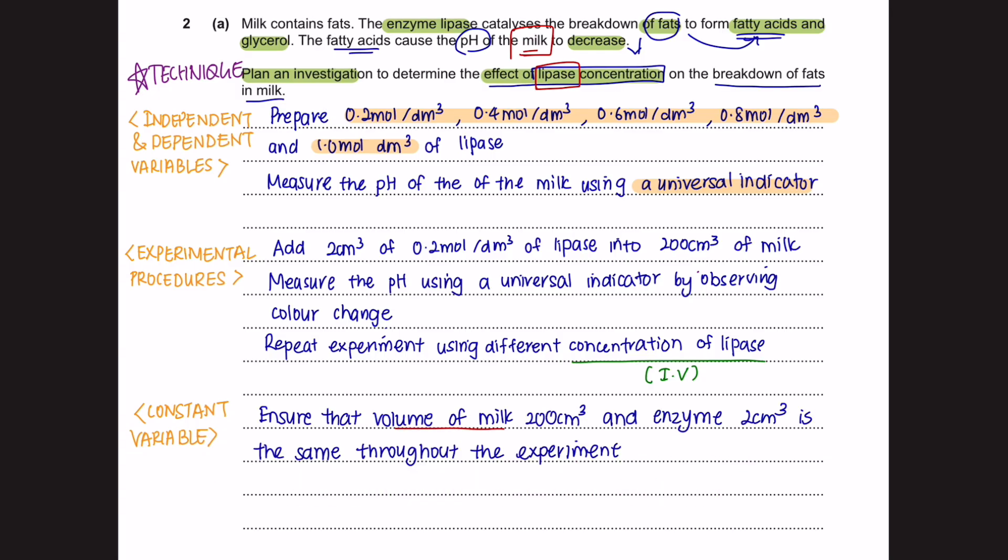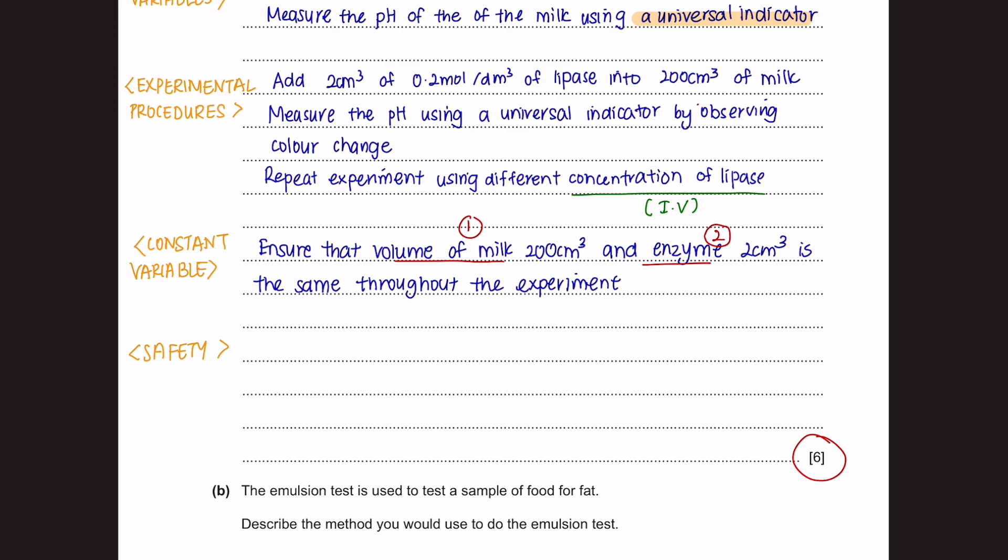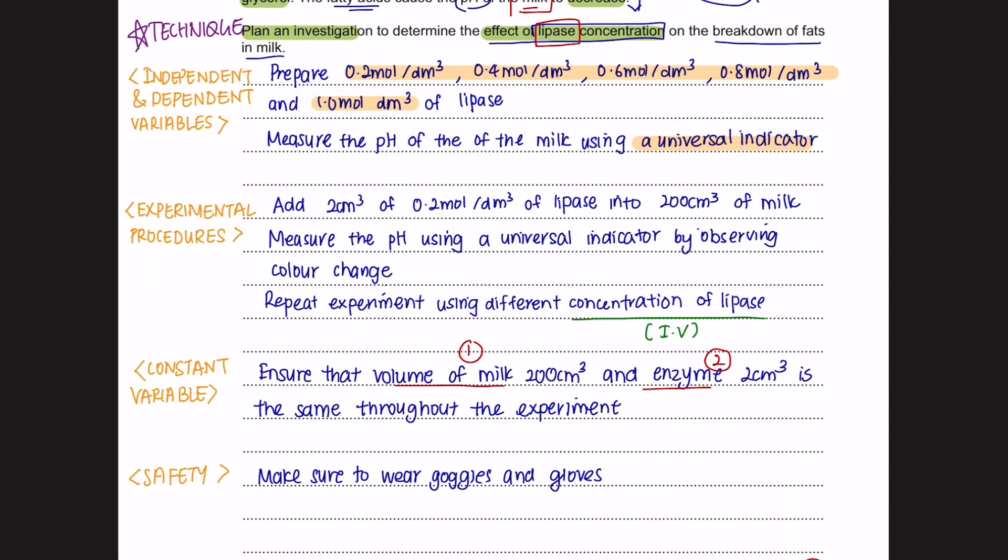Always be sure to mention at least two constant variables. Next, you should always identify risk and suggest safety precautions if applicable to the experiment. So for this experiment, in order to be safe, we can wear goggles and gloves. So these are some of the guidelines that you could use to plan your investigation.